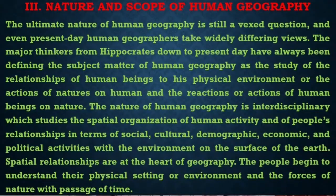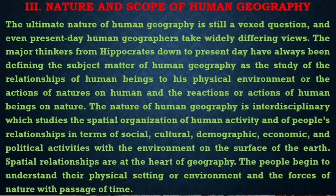Let me start this video with Nature and Scope of Human Geography. The ultimate nature of Human Geography is still a vast question and even present day, human geographers take widely different views. The major thinkers, from Hippocrates down to the present day, have always been defining the subject matter of Human Geography as the study of relationships of human beings to its natural environment, or the actions of nature and human and the reactions of human beings and nature.